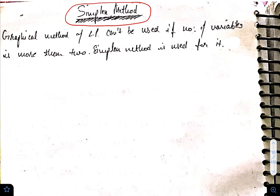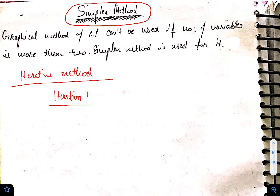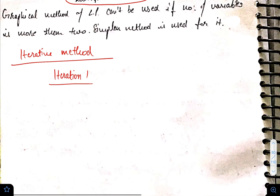The graphical method of LP cannot be used if the number of variables is more than two; the simplex method is used for that. Simplex method is an iterative method — it involves various iterations. There is a certain process we go through, and after iteration one, we go through the same steps again to get iteration two. We keep repeating this until we reach the optimized solution. We will see the steps that tell us when the solution has already been optimized.